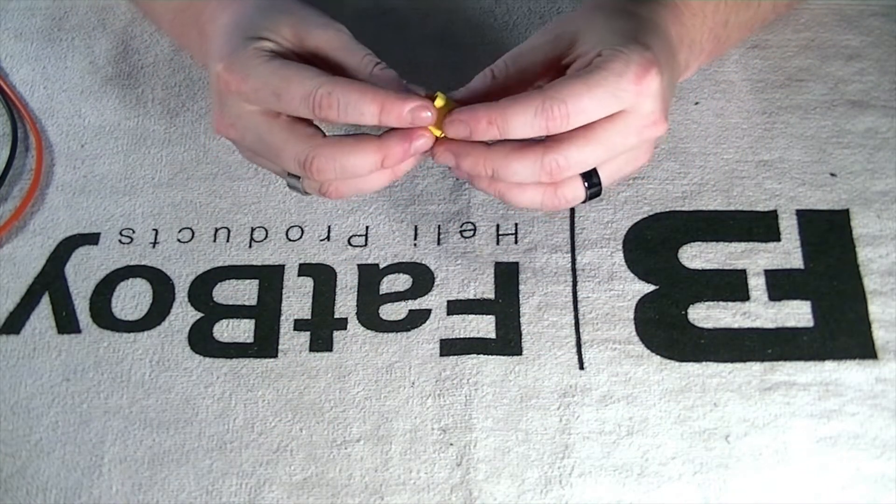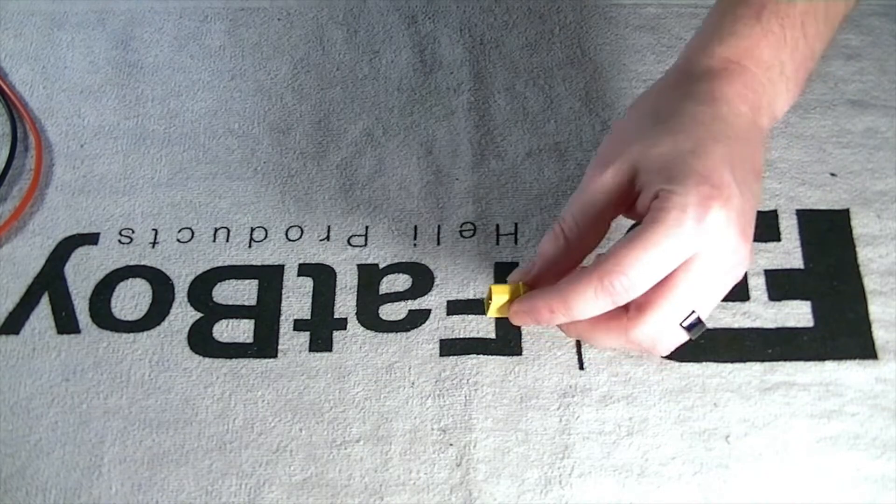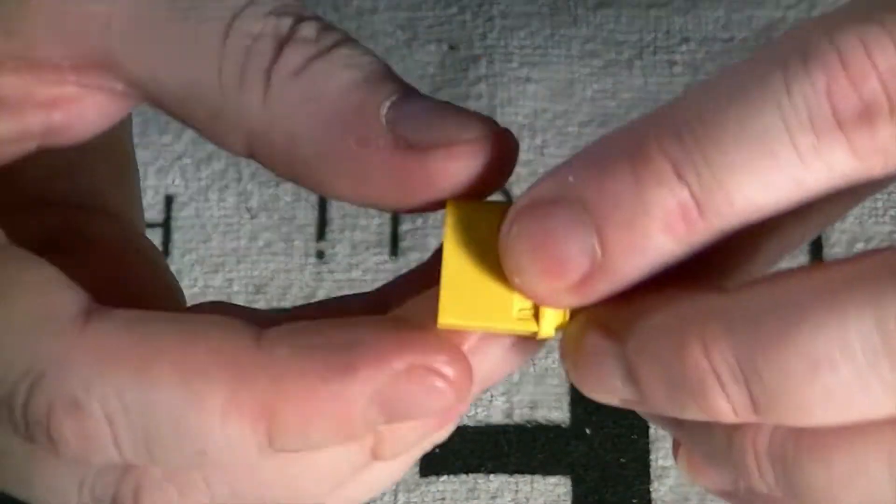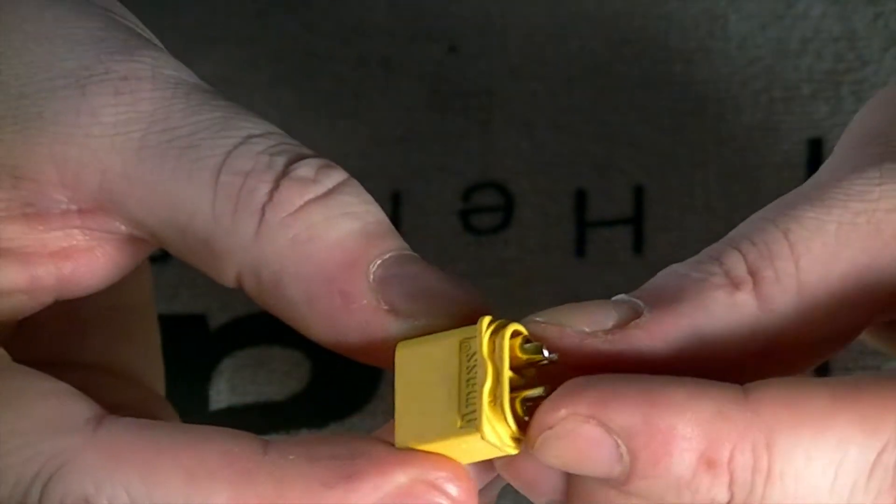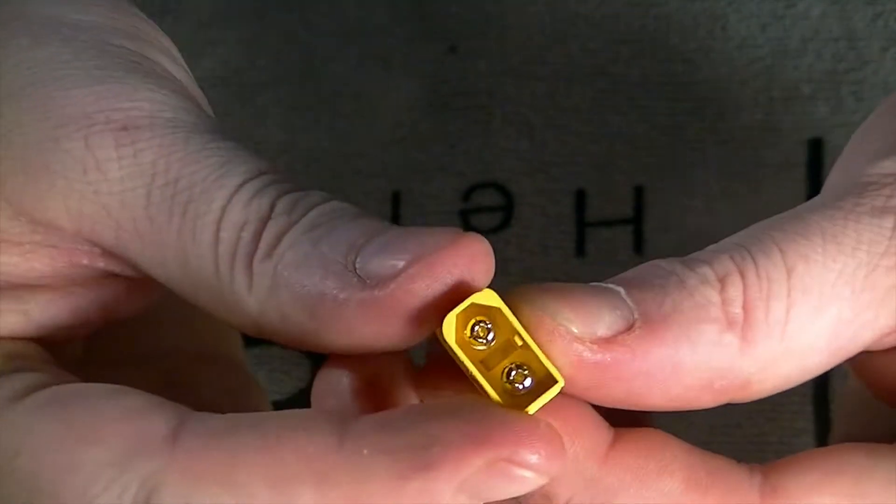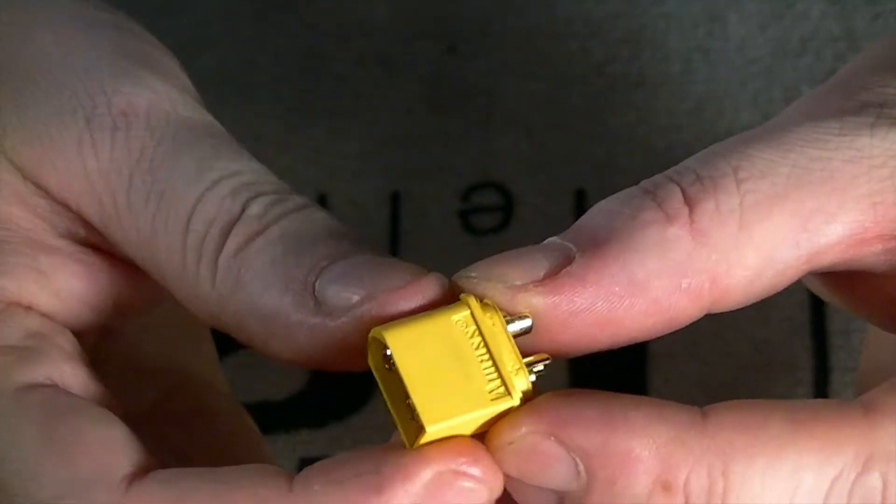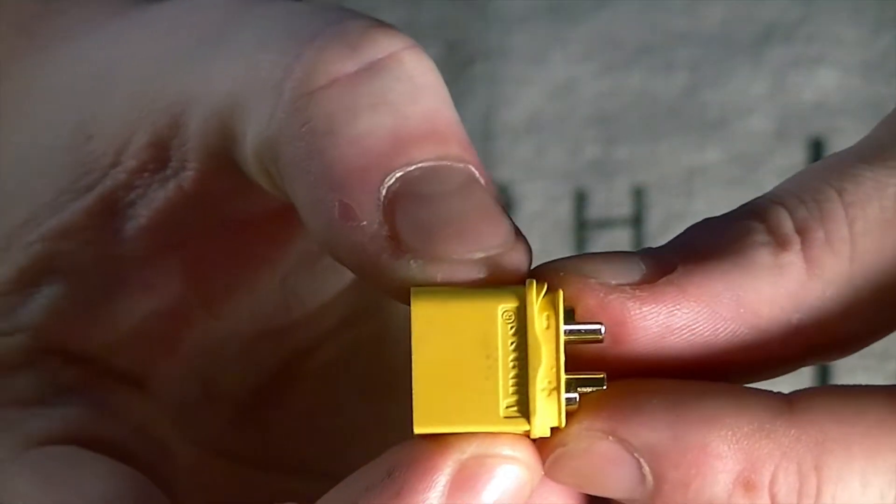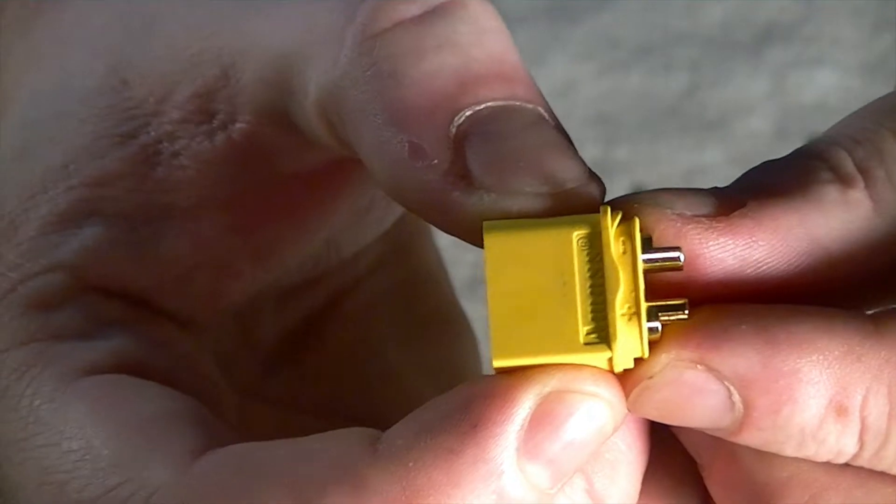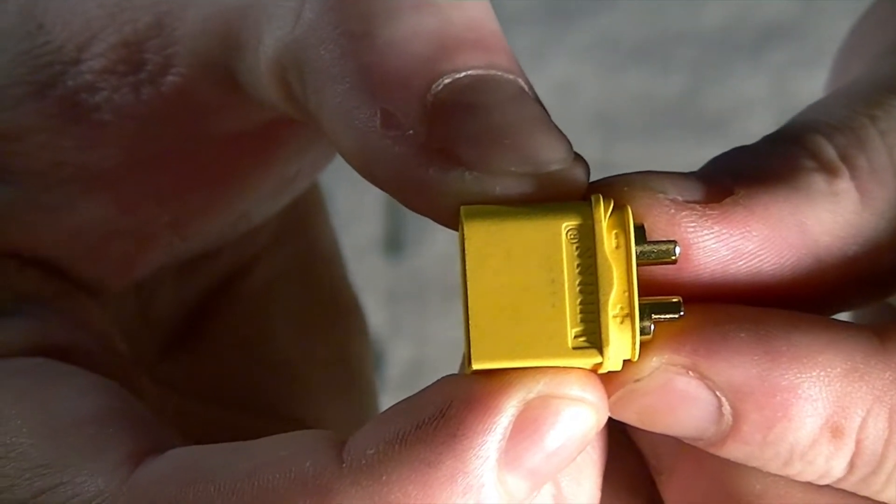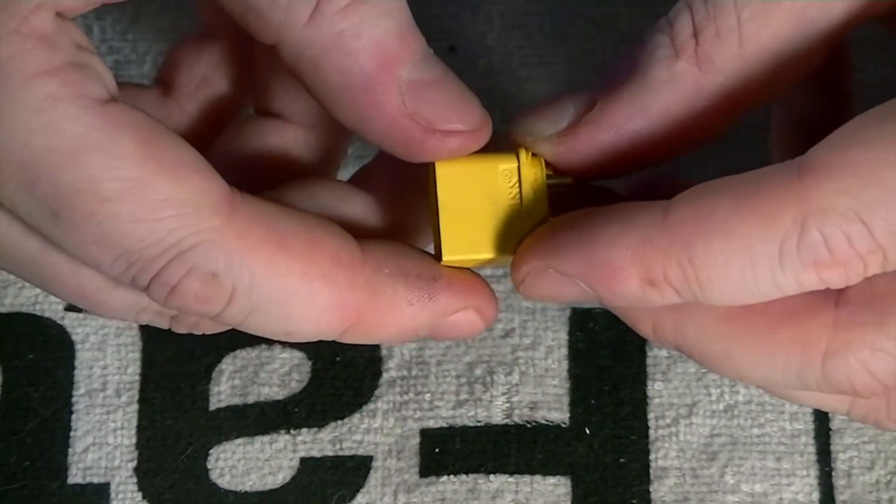But just like any other connector, let's take a quick look at it. These are really nice, I really like the XT60s. They're really well shielded and the bullets inside are really nice. On the plastic there it does show you the positive and negative leads so you know where to connect accordingly.